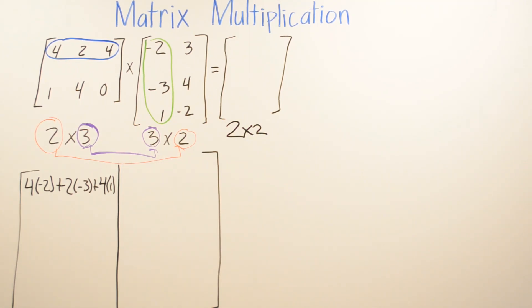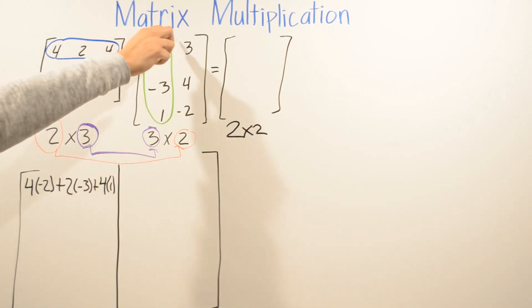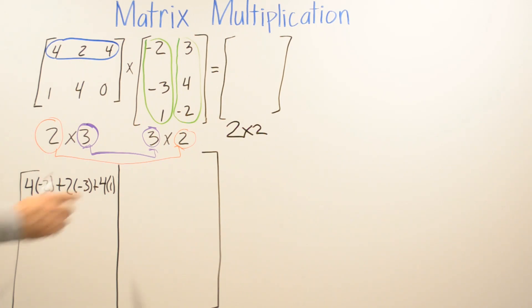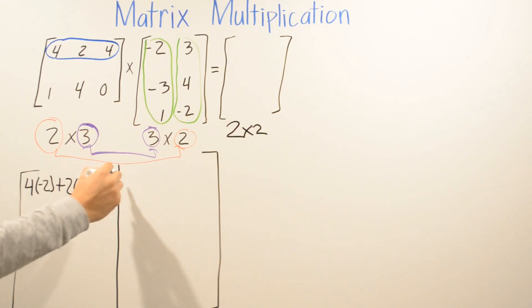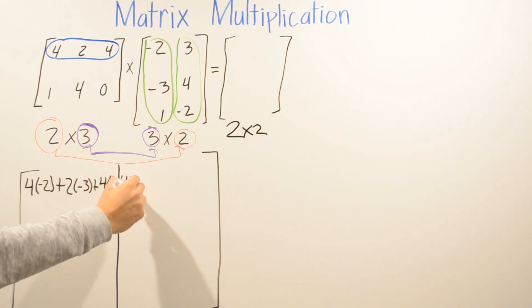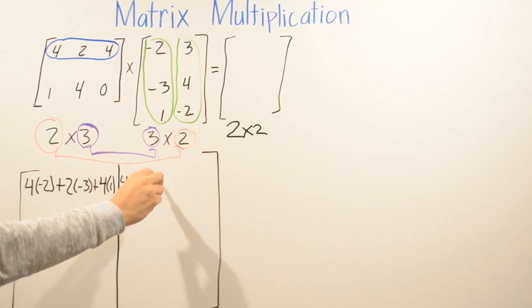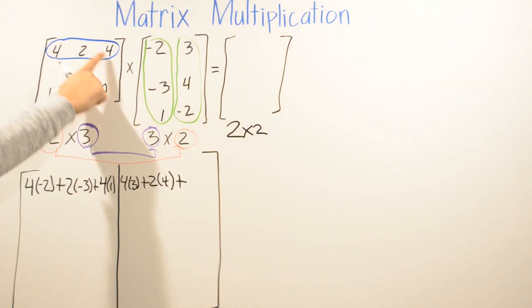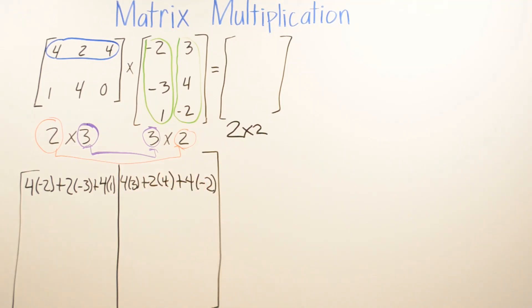For the second corner on the first row, we multiply the same first row by the second column of the second matrix: 4 times 3, plus 2 times 4, plus 4 times negative 2.